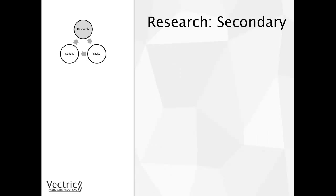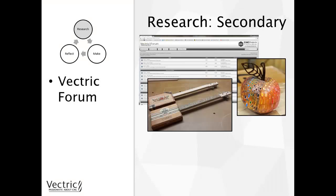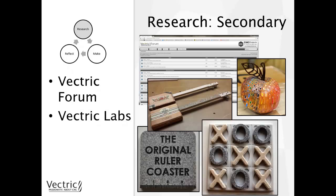What does Vectric have to offer in terms of secondary research? First, we have the Vectric Forum, accessible at forum.vectric.com. Here users can post questions or images of what they have created — a great source of inspiration, showing all different users from beginners to advanced and what they are making. We also have the Vectric Labs site at vectriclabs.blogspot.co.uk, where projects are created and blogged about. Sometimes the files are offered, sometimes not, but blog entries give insight into things encountered when creating the part.